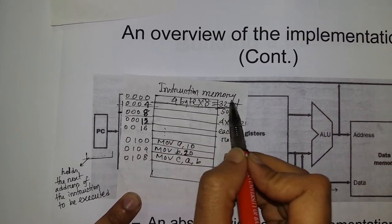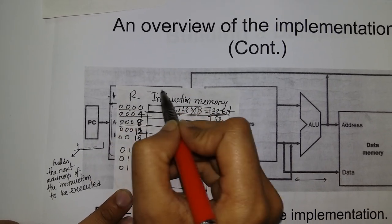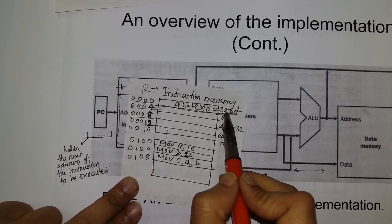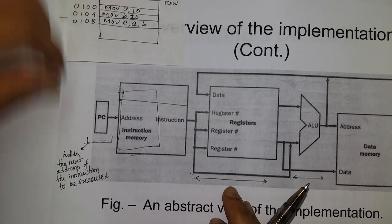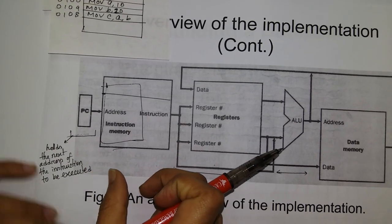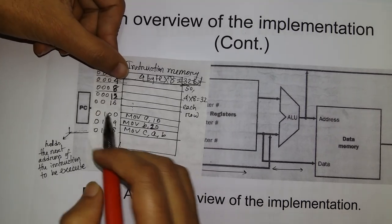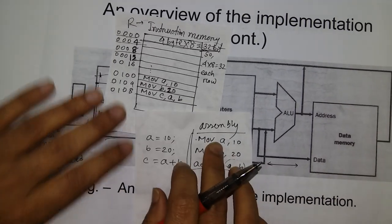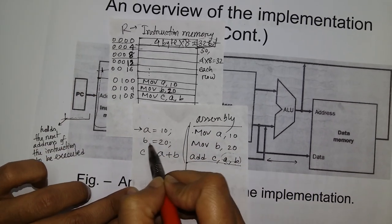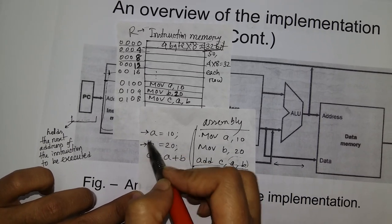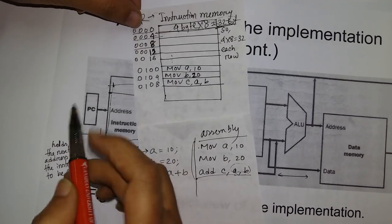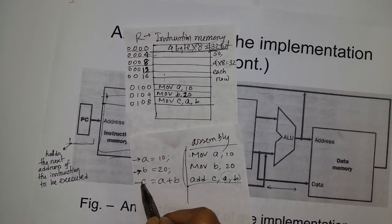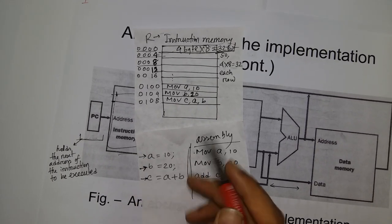Each instruction is 32 bits, whether it's R-type or I-type instruction. Each instruction requires 32 bits. The next instruction is fetched and the PC value increments. This is how each instruction is fetched.